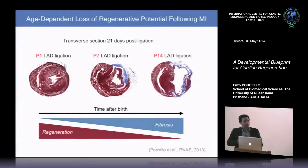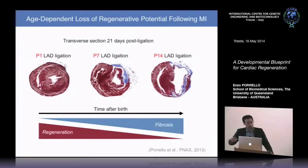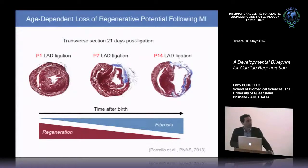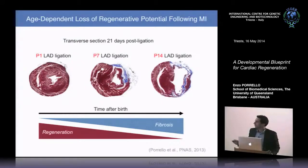One advantage of this MI model is we can perform surgeries at every postnatal developmental age, mapping the developmental loss of cardiac regenerative capacity. In contrast to the one-day-old heart which regenerates substantially by day 21, the regenerative response is severely impaired in the seven-day-old heart and completely gone by postnatal day 14, where large fibrotic scars, ventricular wall thinning, and chamber dilation appear — a reciprocal relationship between regenerative capacity and fibrosis in the first two weeks after birth.